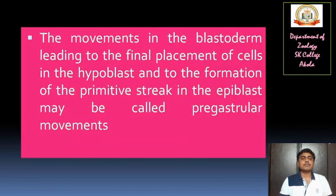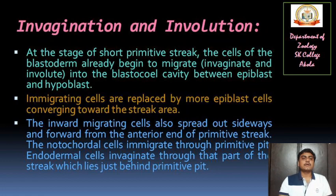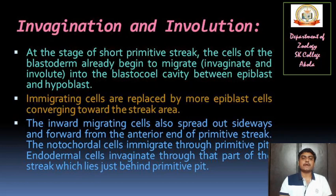The movements in the blastoderm leading to the final placement of cells in the hypoblast and to the formation of the primitive streak in the epiblast may be called pre-gastrular movements. At the stage of short primitive streak, cells of the blastoderm already begin to migrate, invaginate, and involute into the blastocoele cavity, which will form the coelom — the body cavity — between epiblast and hypoblast cells. Immigrating cells are replaced by more epiblast cells converging towards the streak area, and the inward migrating cells also spread out sideways and forward from the anterior end of the primitive streak.